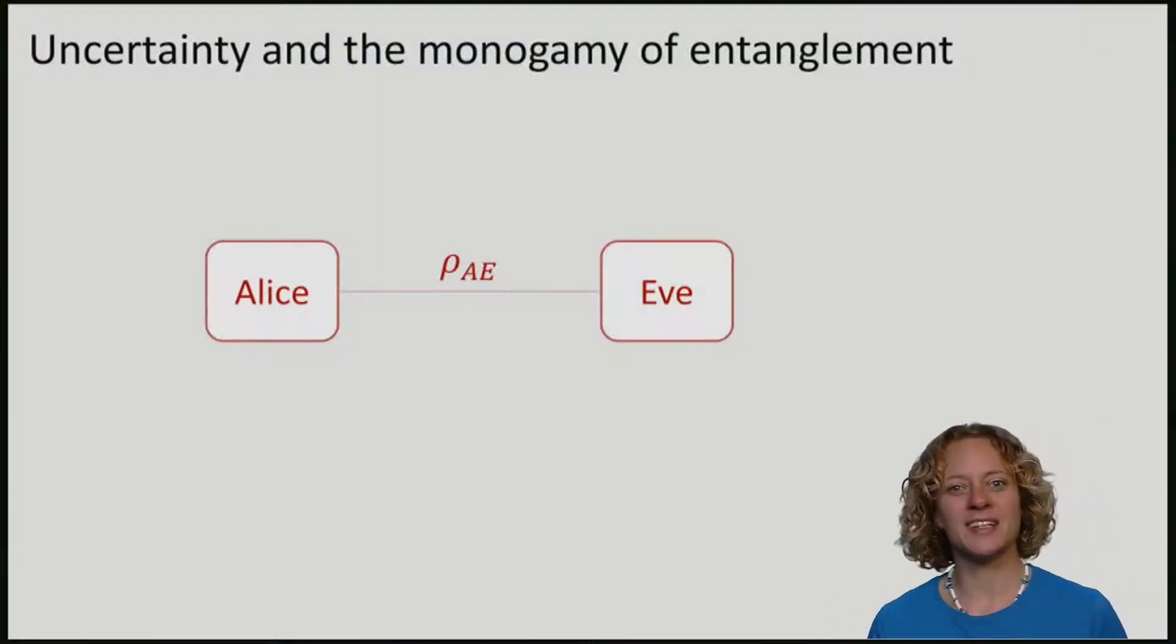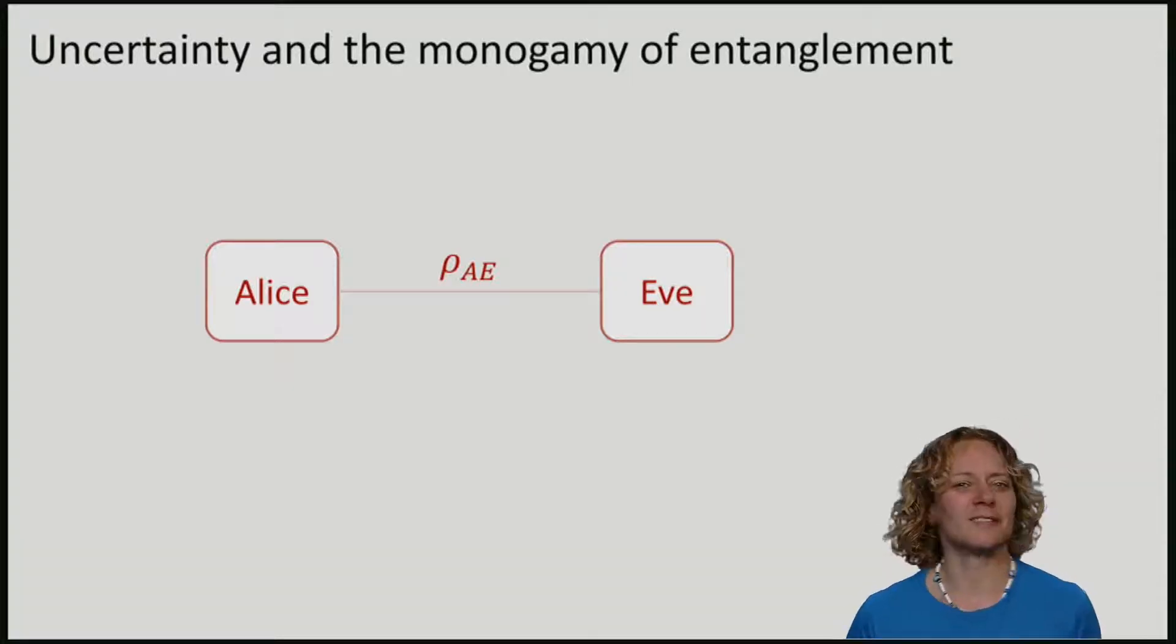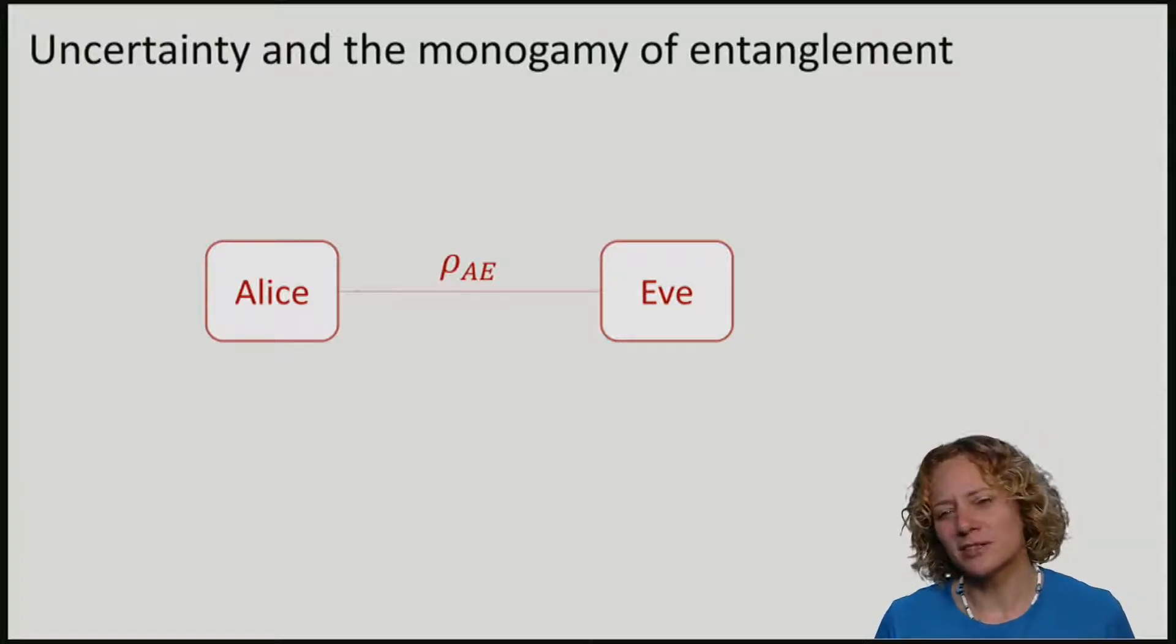We have just seen the uncertainty principle. This uncertainty is an inherent property of quantum mechanics that no attacker of quantum crypto protocols can avoid. And considering Alice and an attacker Eve, it is quite convenient if the attacker is uncertain.